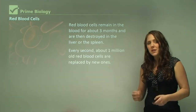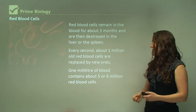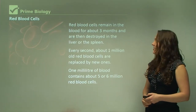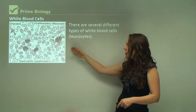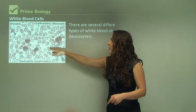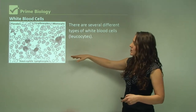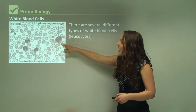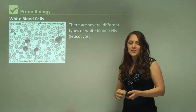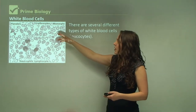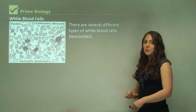Every second about one million red blood cells are being replaced by new ones, and while that sounds like a lot, one millimeter of blood contains five to six million red blood cells. Under a microscope you can see small circular shapes that are lighter in the center because they're thinner there — those are red blood cells. You can also see platelets and large white blood cells of different types, including monocytes, neutrophils, and lymphocytes.